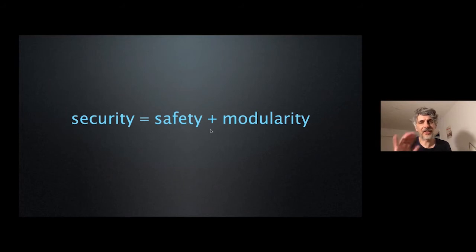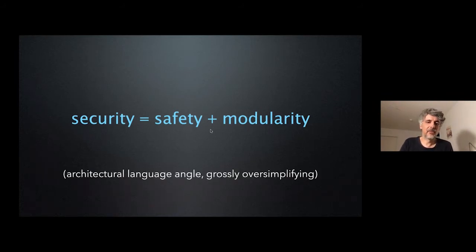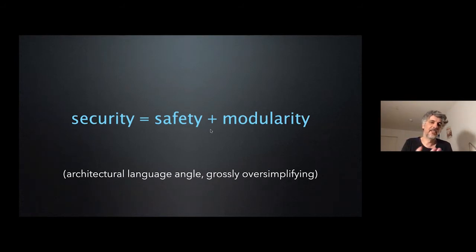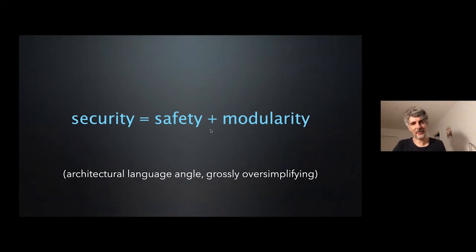This doesn't exist yet, but there's a proposal and hopefully it's coming to WebAssembly soon. As a punchline — and this is obviously grossly oversimplifying and completely ignoring other kinds of issues like Spectre — from a purely architectural language kind of angle, I want to drive home this equation: security, or at least enabling security, is the combination of safety built into the language and strong modularity built into the language. Thank you very much.